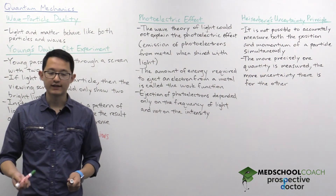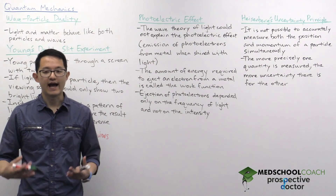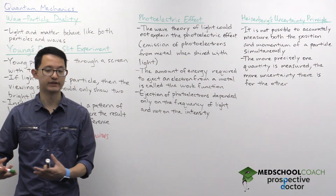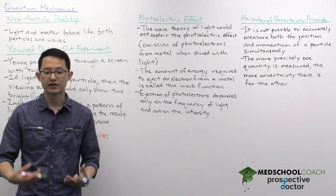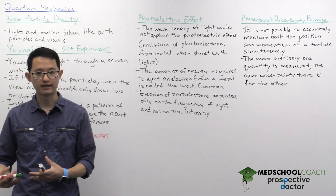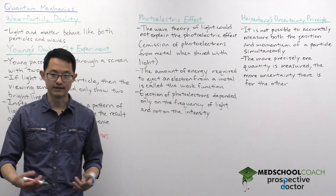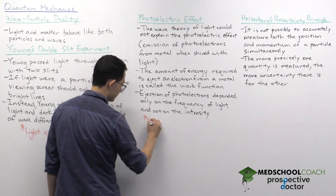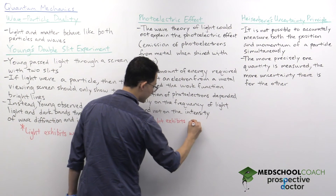The only way these results could be explained was if light acted as a particle. Each particle of light — which we now call photons — delivers its energy to an electron in the metal. If the energy of that individual photon exceeds the work function, then that electron is ejected. So this experiment demonstrates that light exhibits particle behavior.